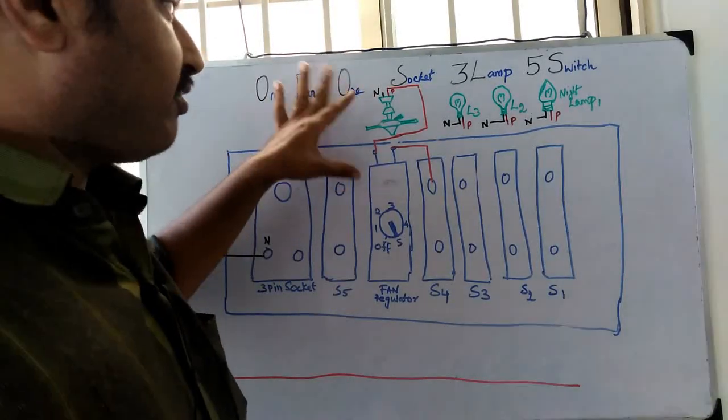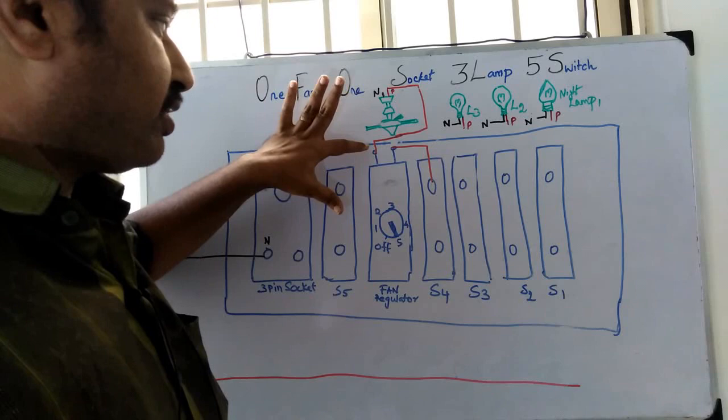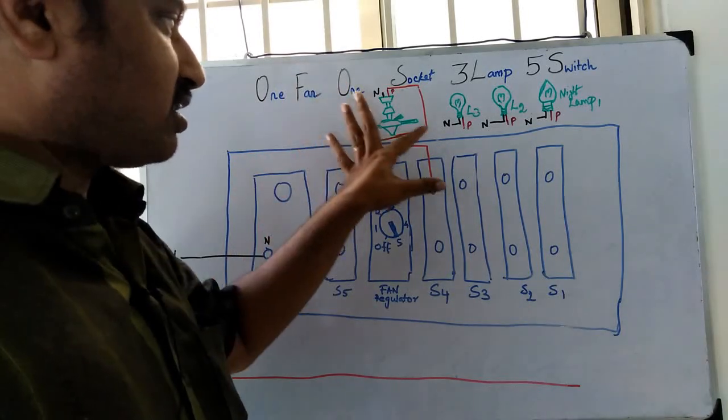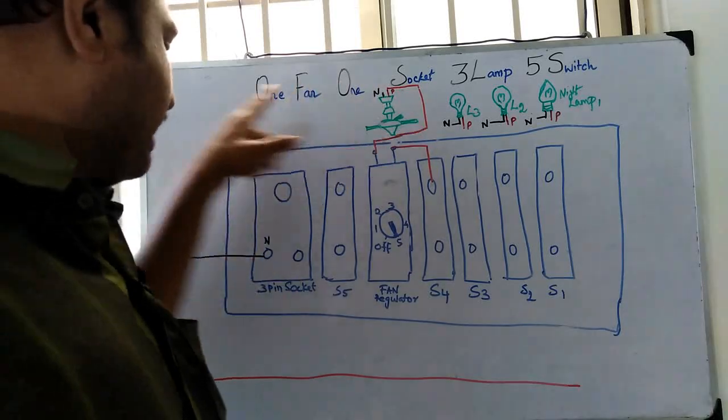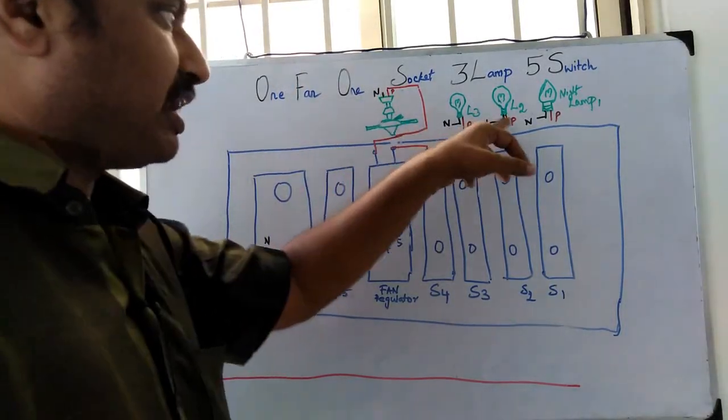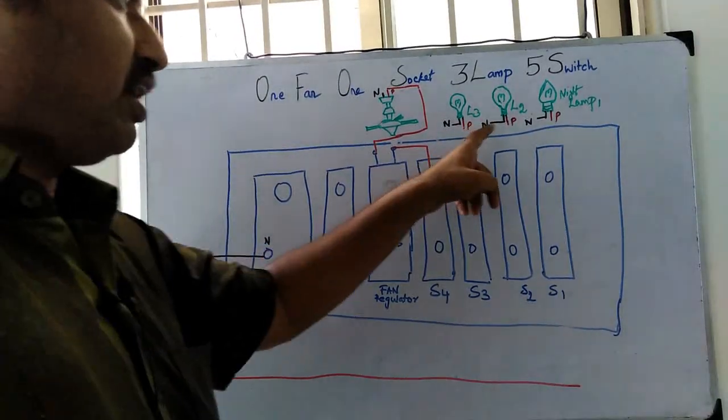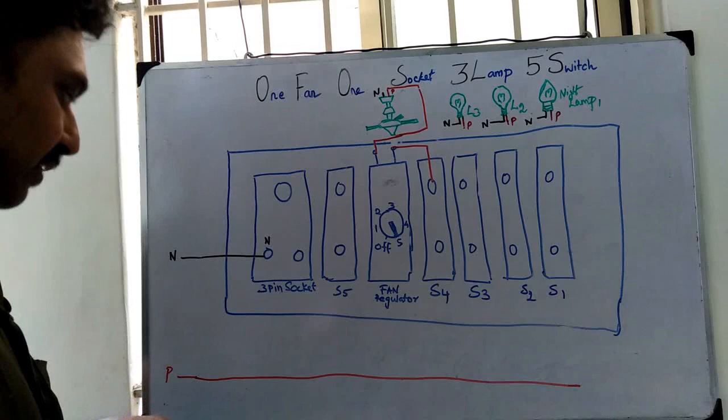If you use a fan, you can add a phase to the fan. You can add a regulator to the regulator. It's neutral. You can add a direct to the neutral lamp. If you use a neutral lamp, you can add a black lamp. Now let's go to the connection.